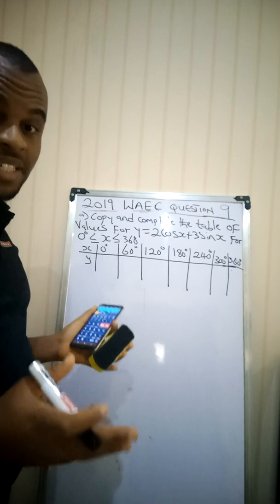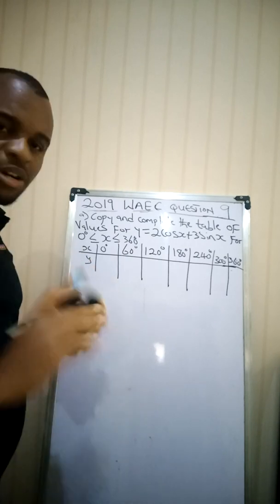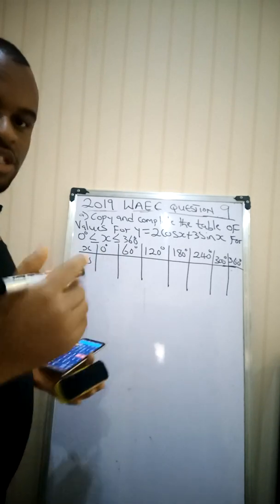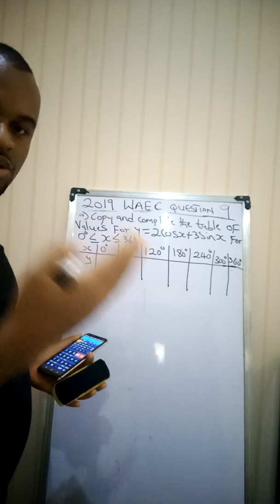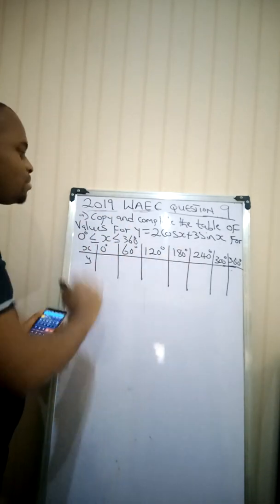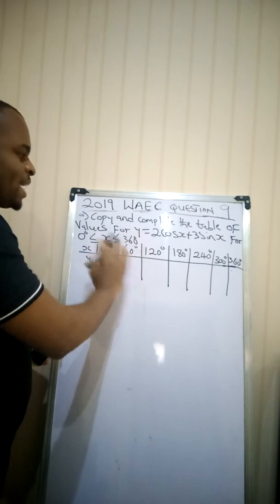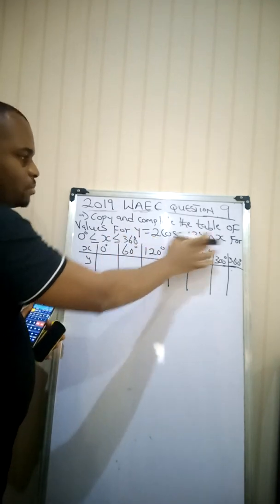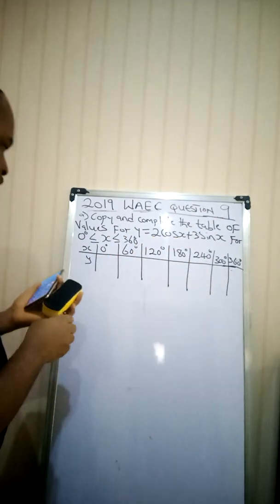The number 9 question is a graph question. I'm not going to plot the graph but I'll just show you how to do it. So that when you have your graph sheet, you are going to answer that. But the A part of the question says we should complete this table. And we are giving the information for y. y is equal to 2cos(x) plus 3sin(x). Now what do we do?